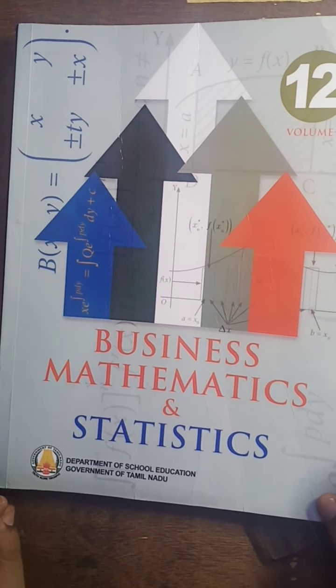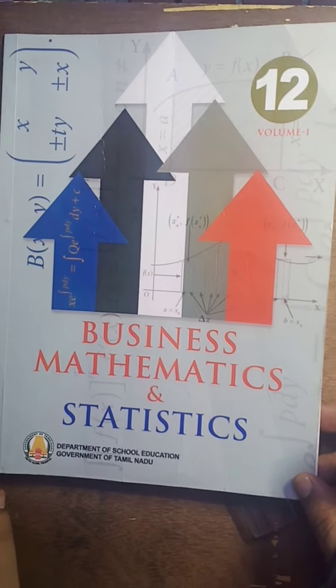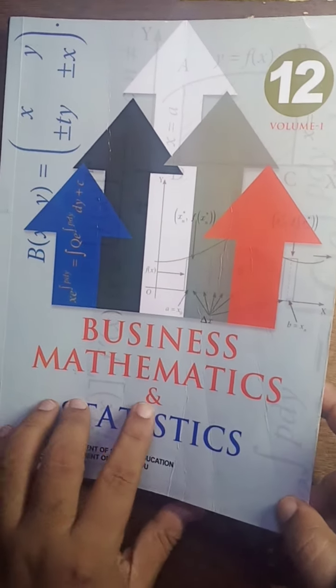This is Sivokumar, 12th Standard Business Mathematics and Statistics. Now Chapter No. 3, Exercise 3.2, Problem No. 1.